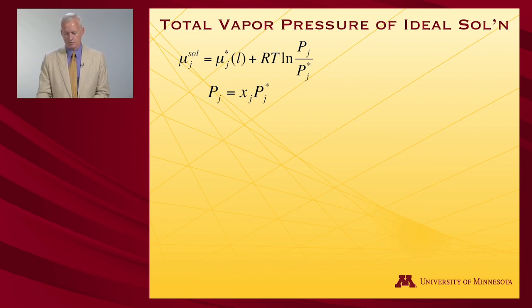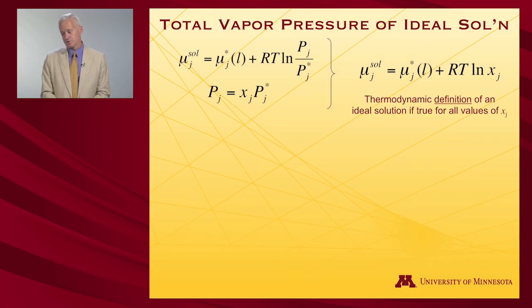When I put all those together, I can now substitute for the partial pressure of the vapor the Raoult's law expression. So I will insert mole fraction times pressure of pure liquid. When I do that, of course I cancel the partial pressures of the two pure liquids, and I get this expression: the chemical potential in solution is that of the pure liquid plus RT log its mole fraction.